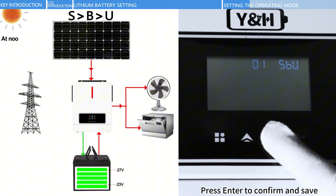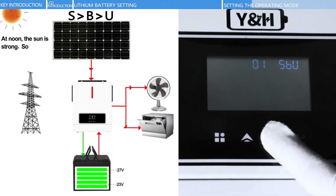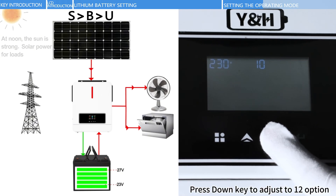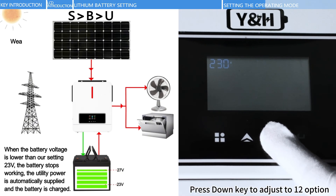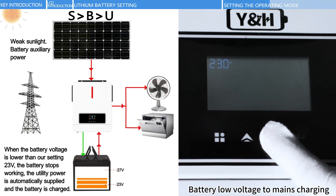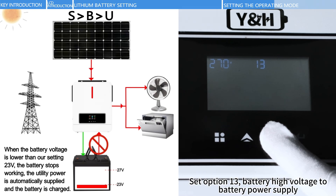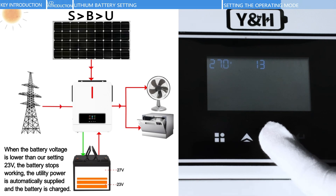Press the Down key to select SBU mode. Press Enter to confirm and save. At noon when solar power is strong, solar energy powers the loads. Press the Down key to adjust to option 12 — battery low voltage for charging. Set option 13 for battery high voltage to switch to battery power supply.